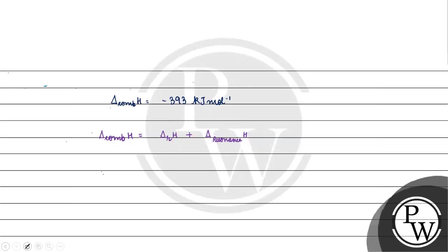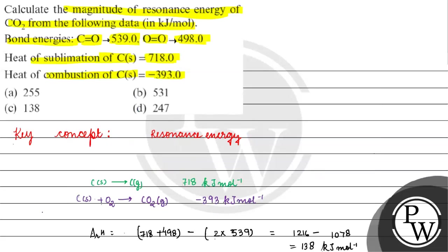The enthalpy of combustion is -393 kJ/mol, minus the standard enthalpy of reaction which is 138 kJ/mol, giving us -531 kJ/mol. So the resonance energy comes out to be 531 kJ/mol. The correct answer for this question is Option B.